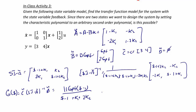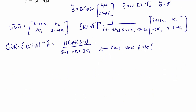What you should notice is that this transfer function has only one pole, at 1 minus K1 minus 2K2. So if you try to set the characteristic equation equal to some arbitrary second-order polynomial such as s-squared plus a1·s plus a-naught, there is simply no way to place two different poles, because this is a first-order characteristic equation. Therefore, this system is not controllable.